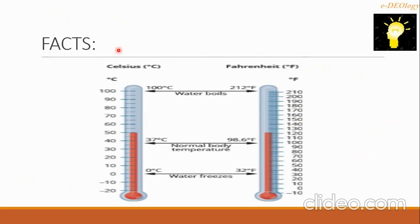Let's go to some facts that we know. The water boiling point is 100 degrees Celsius. Your normal body temperature is 37 degrees Celsius. The freezing point of water is zero degrees Celsius.